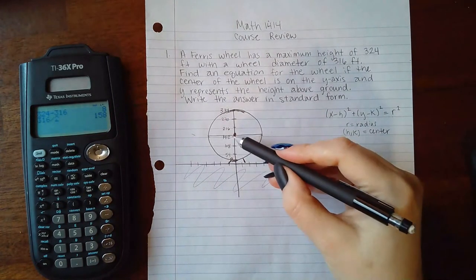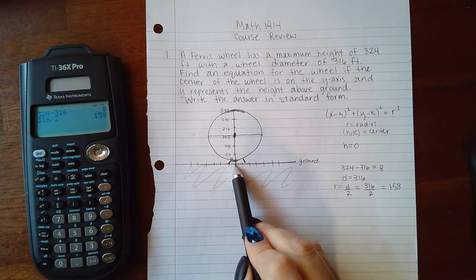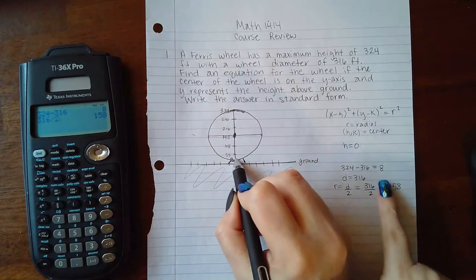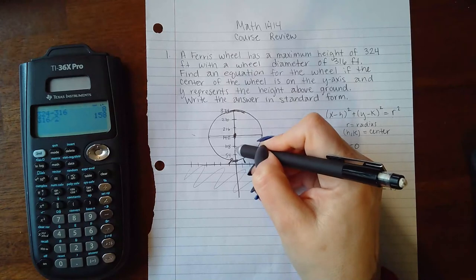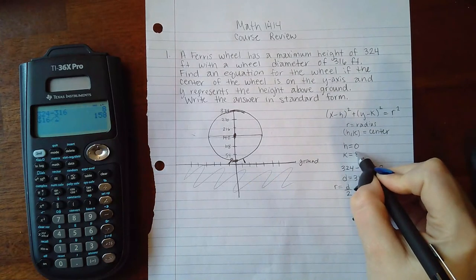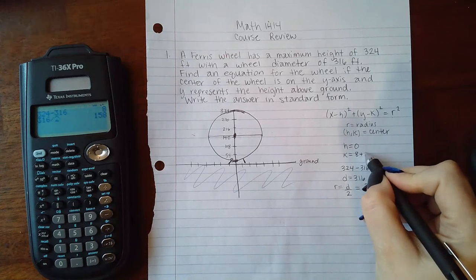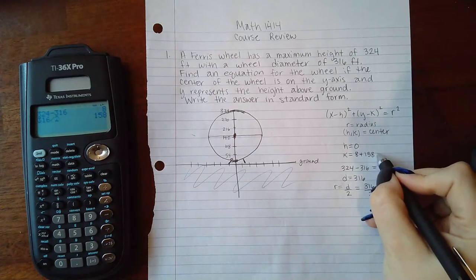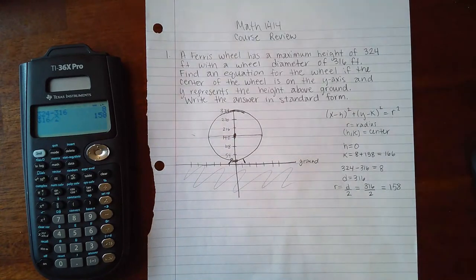Okay, so in order for me to figure out what that y value is, I have to remember that I'm talking about from the ground. So from the ground to the beginning of the circle we know is 8 units. Then from the beginning of the circle we have the whole distance of the radius to get to the center. So my k value is going to be those 8 feet that the wheel is off the ground plus the 158 distance of my radius, which means that my k value is actually going to be 166. That's all the information that I need to write the equation.